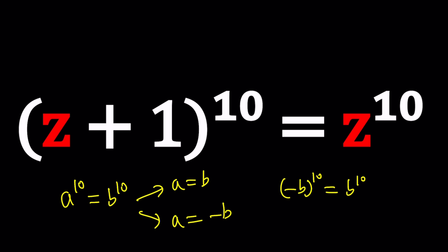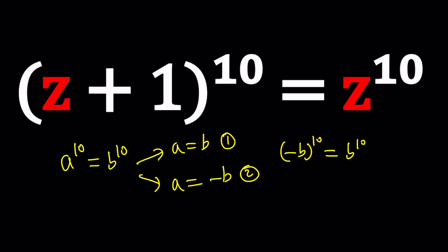First case, A equals B. So if you just get rid of the 10th powers, in other words, take the 10th root of both sides, then you're going to get something like this. Case 1, z plus 1 equals z. Z cancels out, 1 equals 0. That doesn't make sense, does it? Nonsense. So no solution from here.